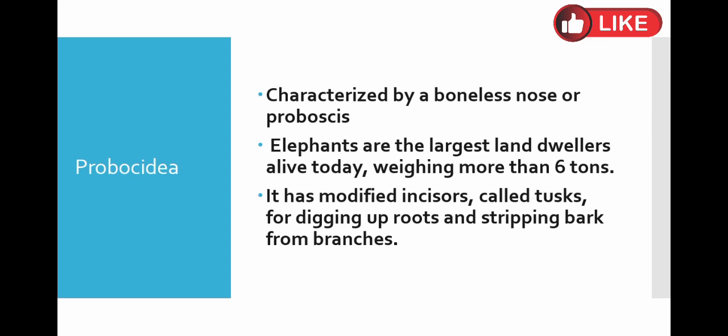Next, we have the order Proboscidea, characterized by a boneless nose or trunk. The word Proboscidea refers to animals that have no bony nose but have a long trunk and present long tusks — meaning elephants. The word Proboscidea is used for elephants.